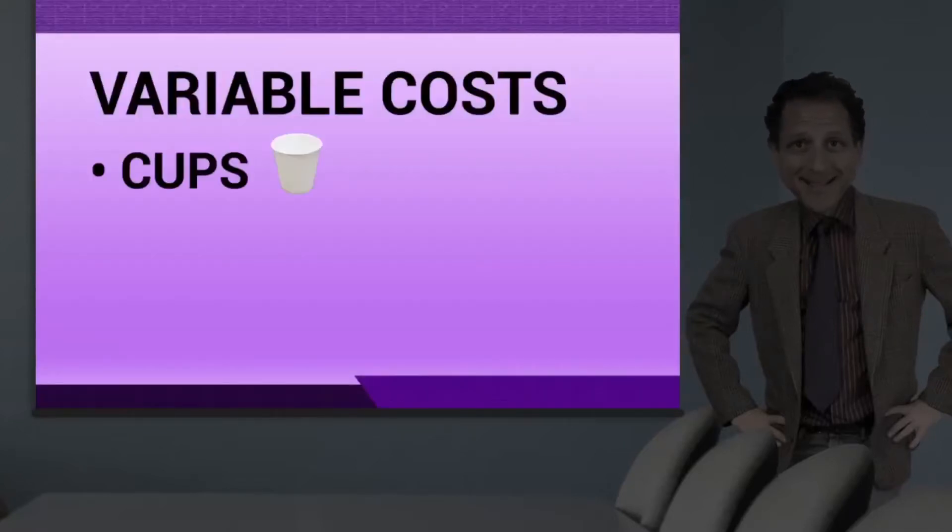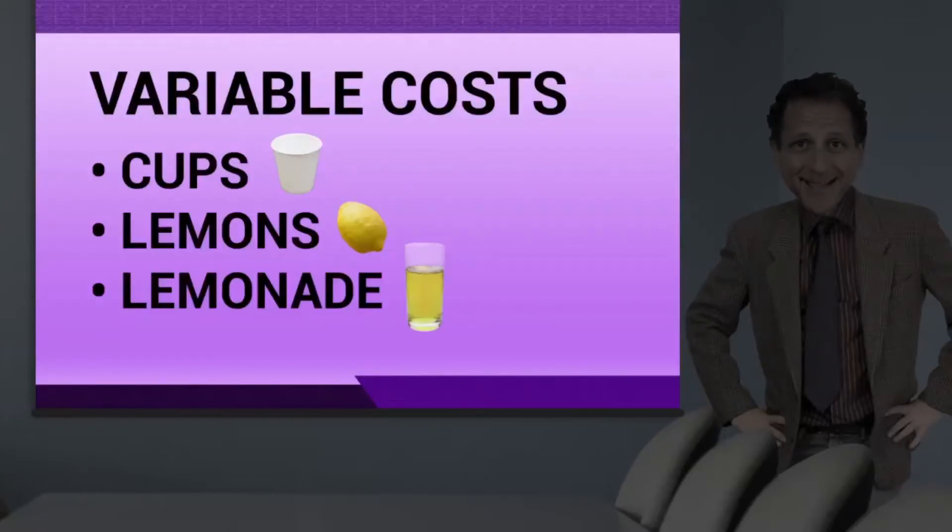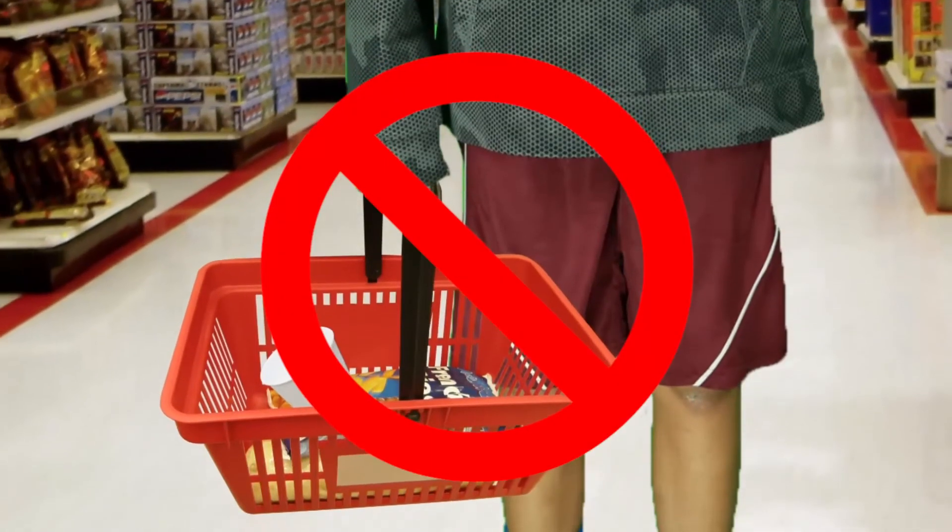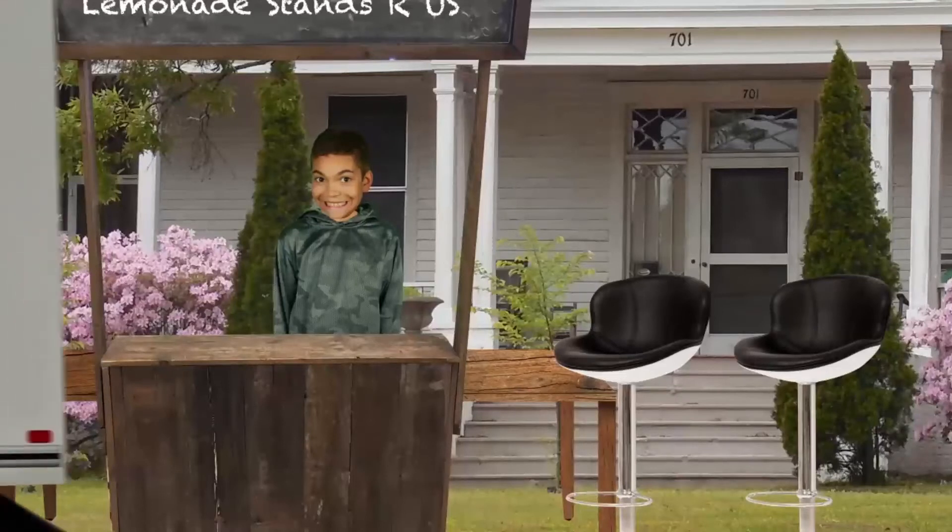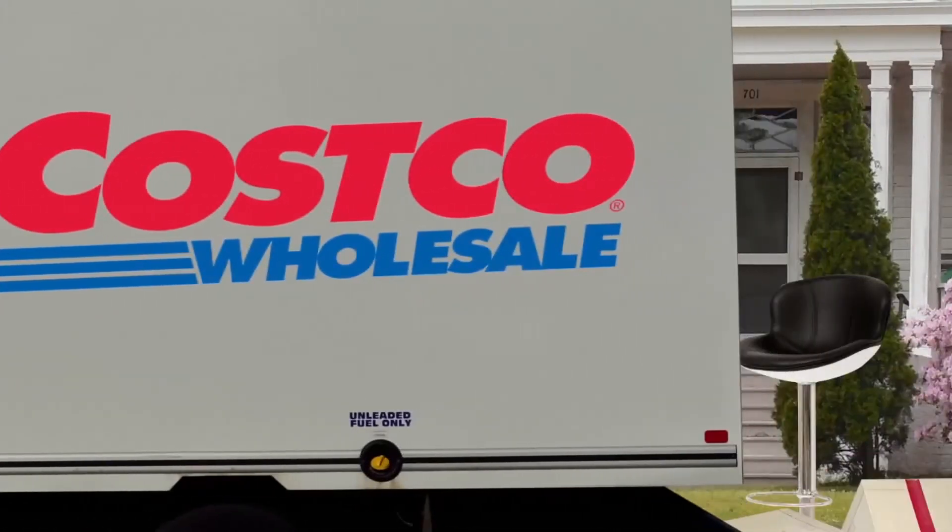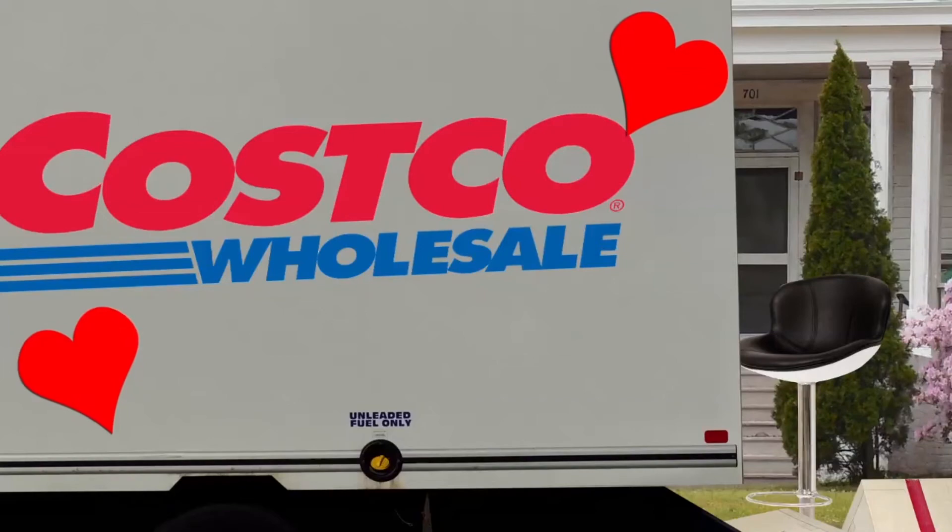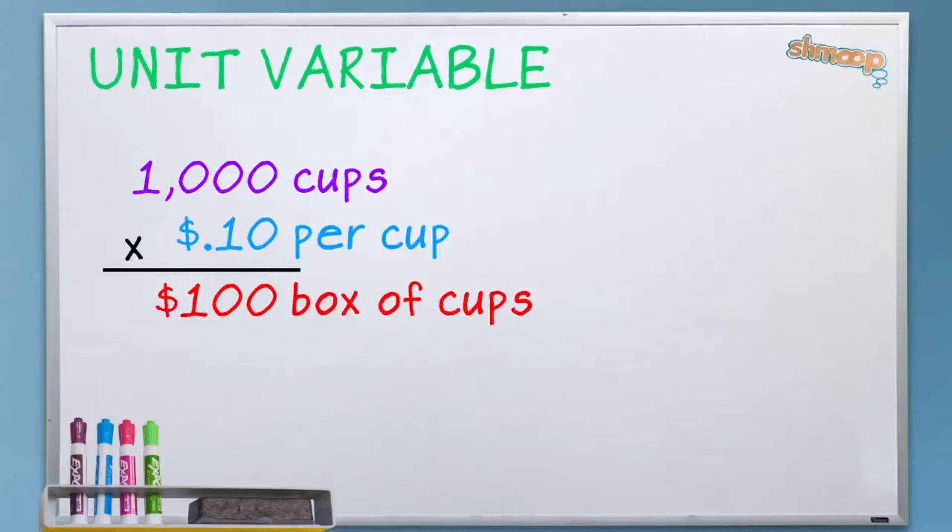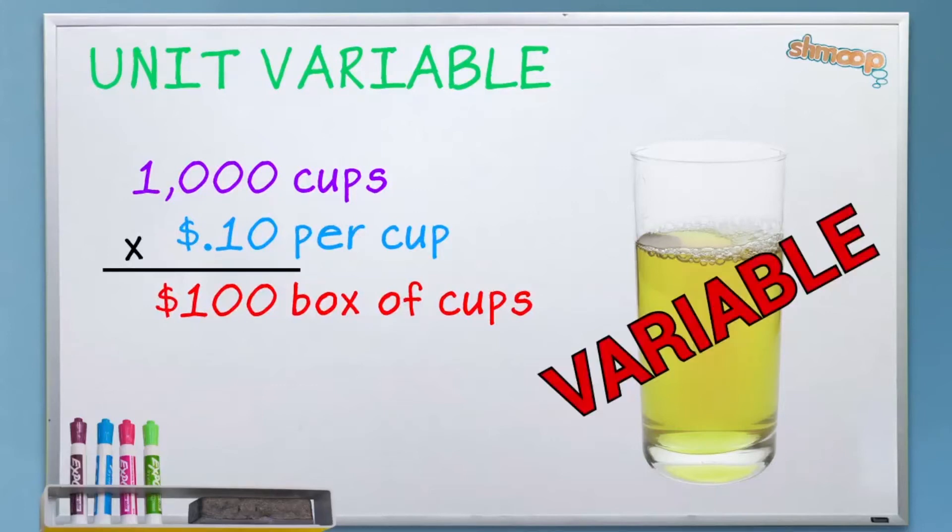So moving on, next category: variable costs, cups and lemons. The lemonade itself, they're variable amounts mostly, but you don't buy cups one at a time. Here's another curve ball for you. You buy them in boxes of a thousand to save money via volume discounts at Costco. So cups expenses are variable, but at a unit rate of a thousand cups at a time. So if the cups cost you a dime, then the unit variable is the hundred dollar box of a thousand cups. Generally speaking, the product you serve, because its volumes generally vary, is almost always a variable cost.